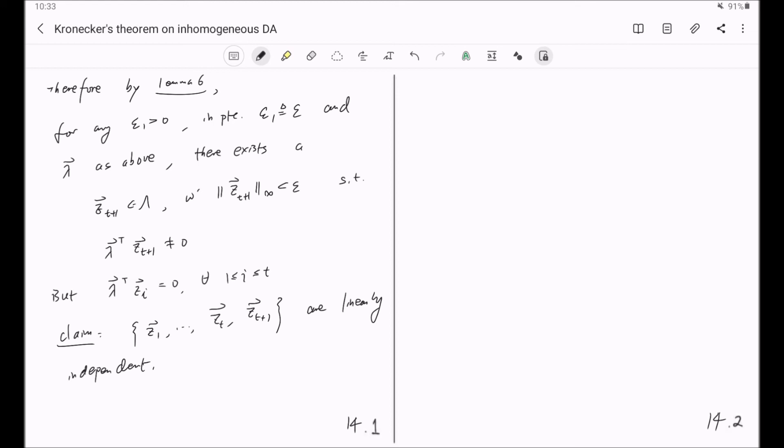Indeed, if you have this linear combination, then by applying lambda transpose, we get, so all the first T terms will be killed by this and last term will remain. So KT plus 1 times lambda T ZT plus 1 is equal to 0. But this part is not 0. So KT plus 1 is equal to 0.